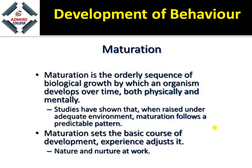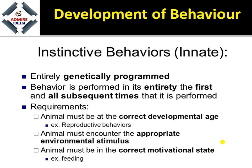Maturation is the orderly sequence of biological growth by which an organism develops over time, both physically and mentally. Maturation sets the basic course of development, and experiences are adjusted accordingly. Next is instinctive behavior — the behavior that is built into the genes, that is genetically programmed. Basic important points: it is entirely genetically programmed, and the behavior is performed in its entirety the first and all subsequent times it is performed.